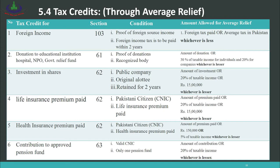Number 3: Investment in shares — if you invest in a public company, the shares are originally allotted, and you hold them for at least two years, the deductible amount is the lowest of: the amount of investment, 20% of taxable income, or rupees 15,00,000. Number 4: Life insurance premium — conditions and limits are also specified. Number 5: Health insurance premium paid — the lesser of the premium paid, rupees 1,50,000, or 5% of taxable income.